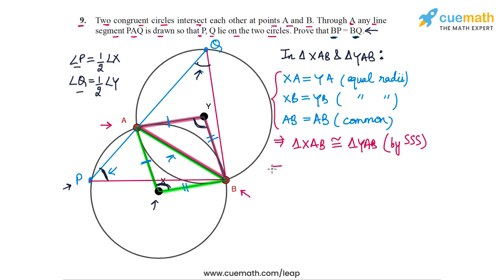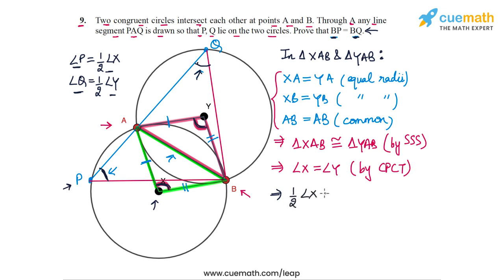Therefore, triangle XAB is congruent to triangle YAB by the SSS congruence criterion. This means that angle X and angle Y are also equal by CPCT. So we have angle X equals angle Y. We observed earlier that angle P equals half of angle X, and angle Q equals half of angle Y — so half of angle X is angle P, and half of angle Y is angle Q.